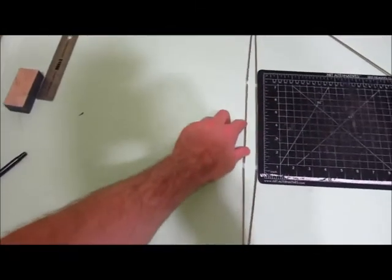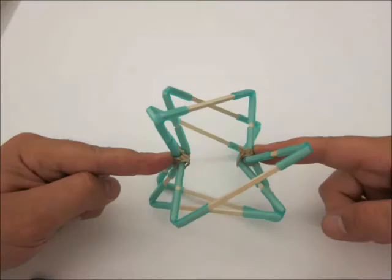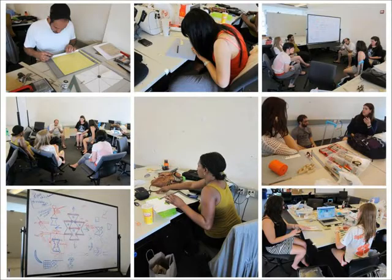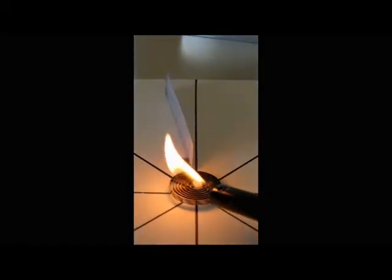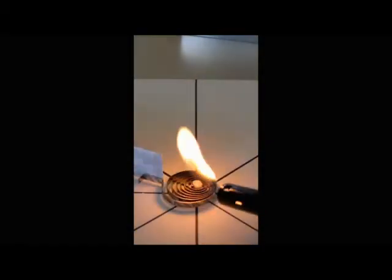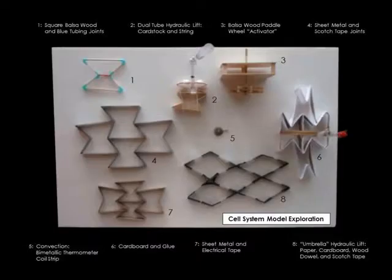Models needed to be rigid enough to hold a form but flexible enough to allow for a free range of motion. This ultimately led to further investigation of materials and their properties. Ideas were then tested through a series of trial and error by modeling. Discoveries made through the modeling process directed our efforts toward hydraulics and convection as a means of activation.